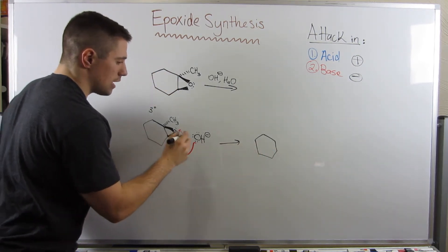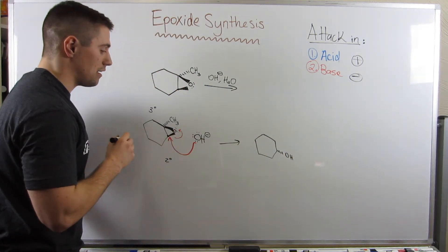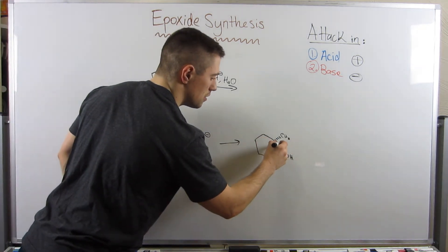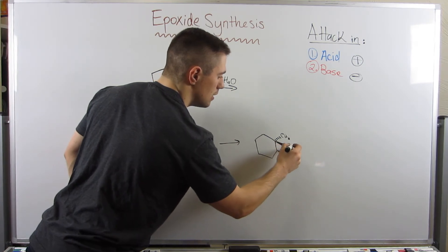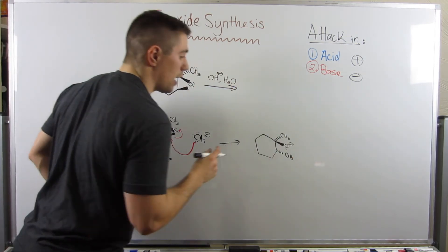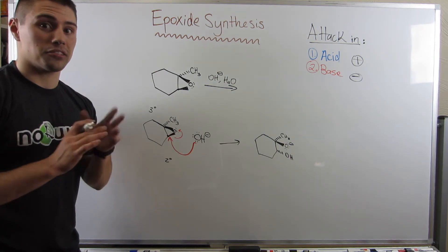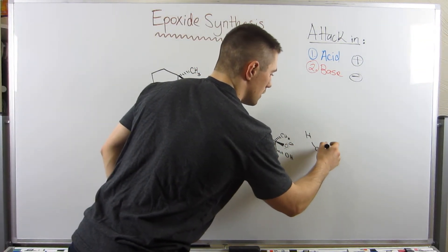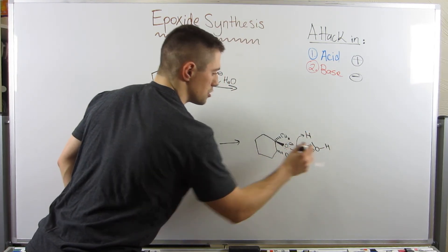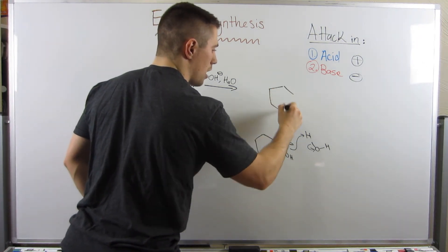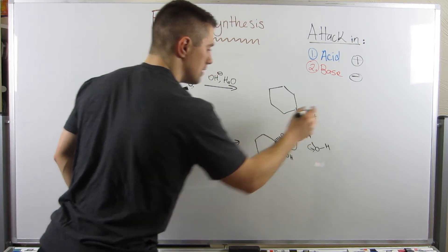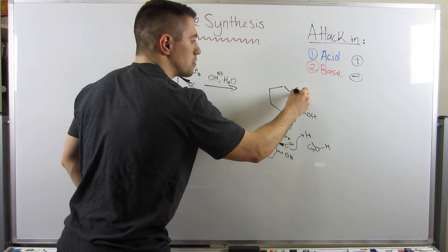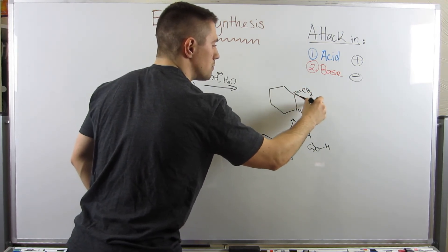The result of that electron flow: on the bottom carbon I have a dashed hydroxide - that's the one we just added. I still have the dashed CH3 - I didn't touch him at all. And now I have a wedged O-, because he got kicked off and took on an extra electron pair. We just have to clean him up: H2O is our source of H+ in this scenario. The final product has the dashed OH we added through the SN2 attack on the less sterically hindered carbon, the dashed CH3 we didn't touch, and the wedged OH.